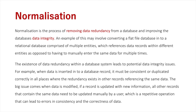The existence of data redundancy within the database system leads to potential data integrity issues. For example, when data is inserted into a database record, it must be consistent or duplicated correctly in all places where the redundancy exists in other records referencing the same data. If I've copied the address of a certain user into one area of my database and referenced that user again in another record, I have to make sure their address is exactly the same in that record.